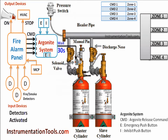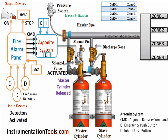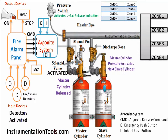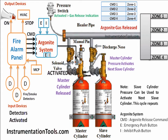The Argonite System waits for some time before releasing the Argonite cylinders — typically 30 to 60 seconds. Sometimes we receive false fire and smoke detector alarms. In that case, we need to inhibit the Argonite Release Command. Inhibit means stop the action. Inhibit push buttons are generally installed near the Argonite System or in respective zones, and are also provided on the Argonite panel as shown in the animation.